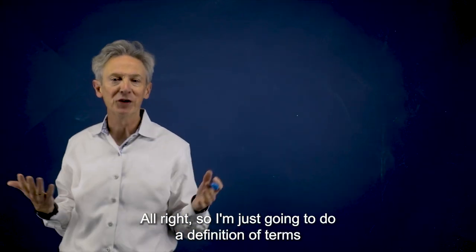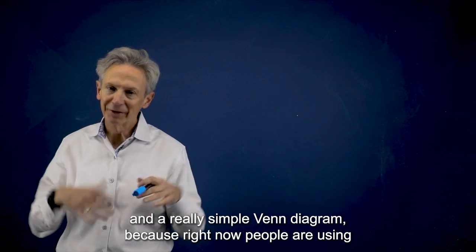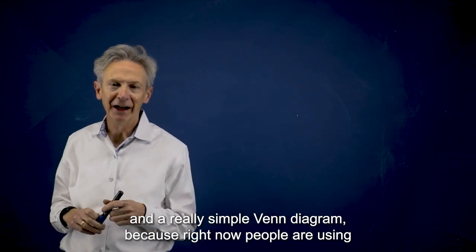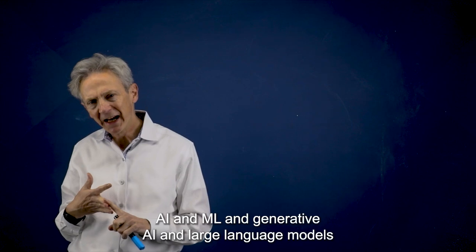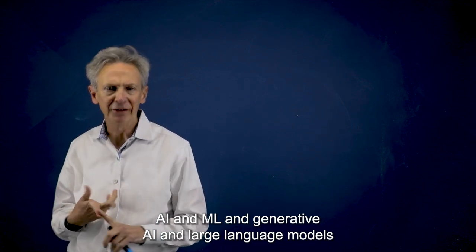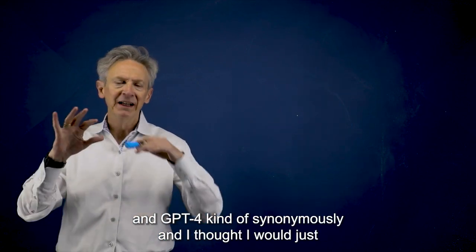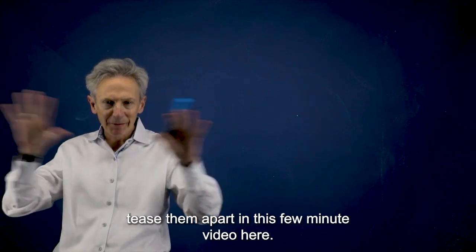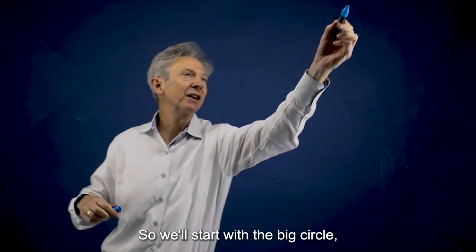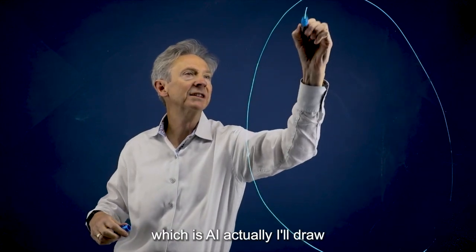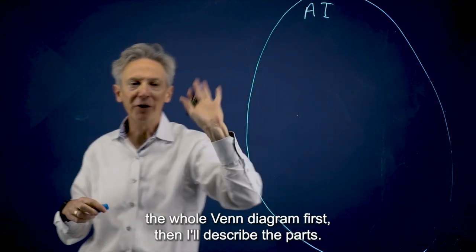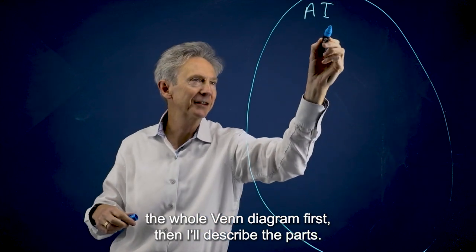All right. So I'm just going to do a definition of terms and a really simple Venn diagram. Because right now people are using AI and ML and generative AI and large language models and GPT-4 kind of synonymously. And I thought I would just tease them apart in this few minute video here. So we'll start with the big circle, which is AI. Actually, I'll draw the whole Venn diagram first and then I'll describe the parts.